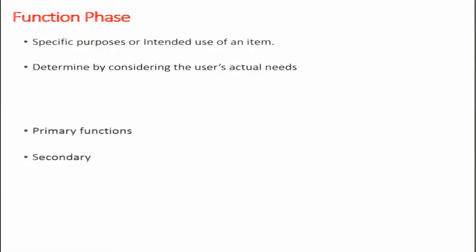The next major pillar in the value engineering job plan is the function phase. In the function phase, we try to identify the specific purposes or intended use of an item. We ask: what is the product? The answer could be a pen, chair, table, mobile phone, duster, or mobile cover. What is it supposed to do? For a chair we say 'provide support,' for a pen 'make marks,' for a mobile 'make calls,' for a duster 'clean or wipe off dust.'